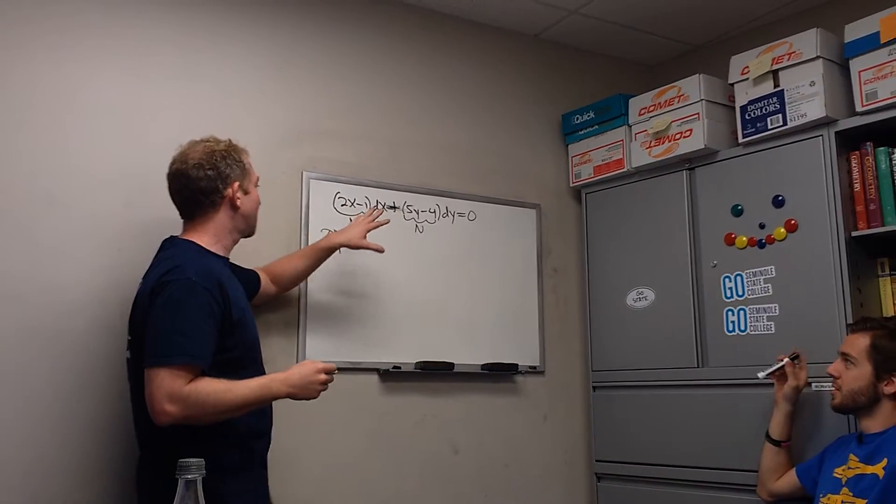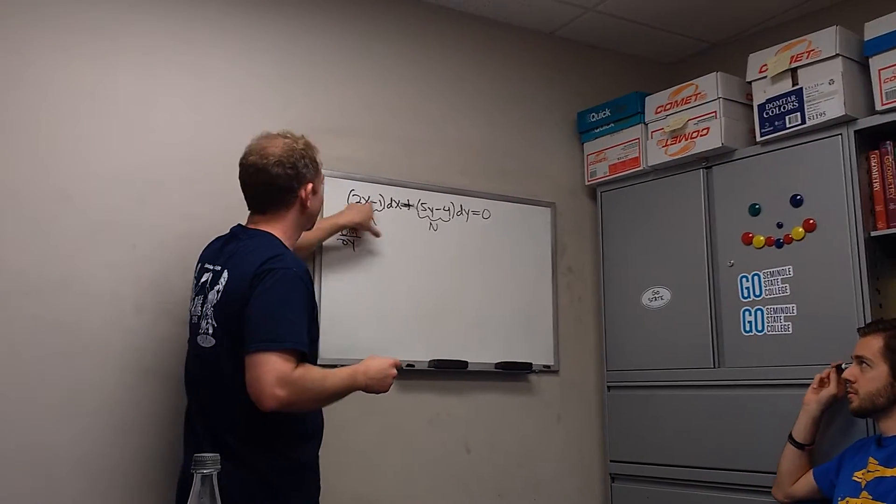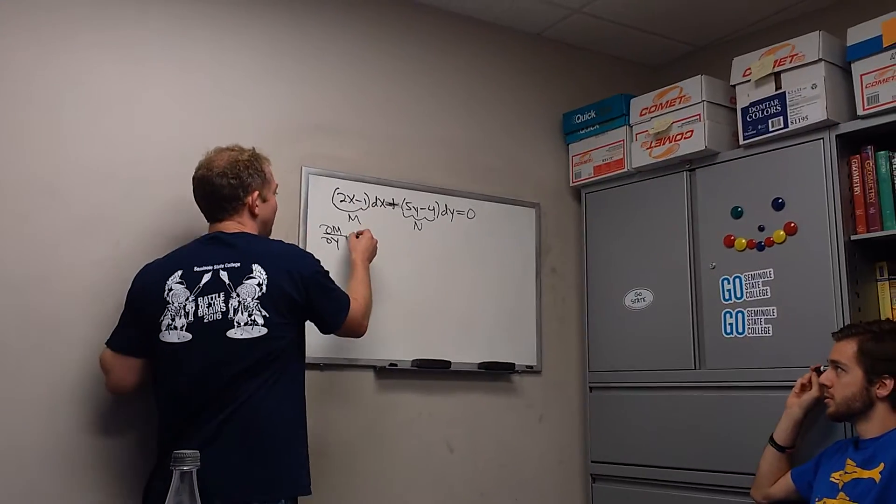Yeah, so basically, anything that doesn't have a y is constant. So 2x is constant, negative 1 is constant, so the derivative here is 0.